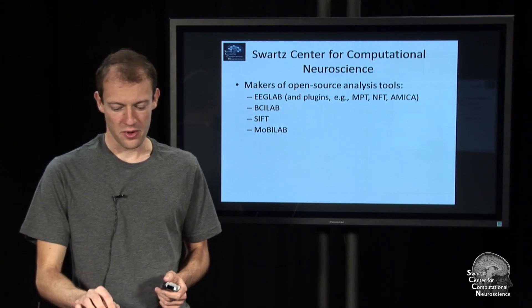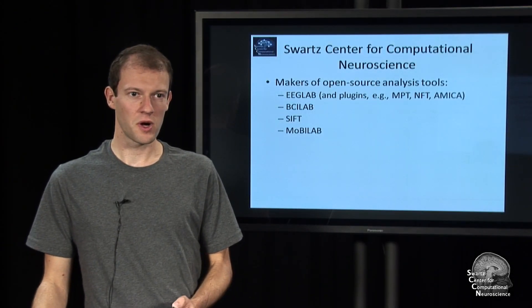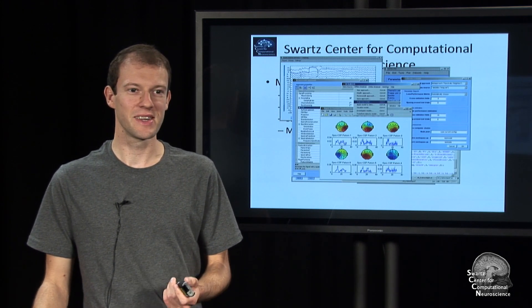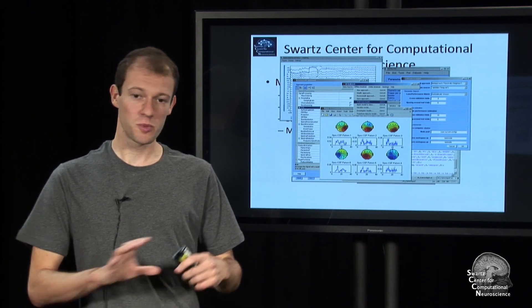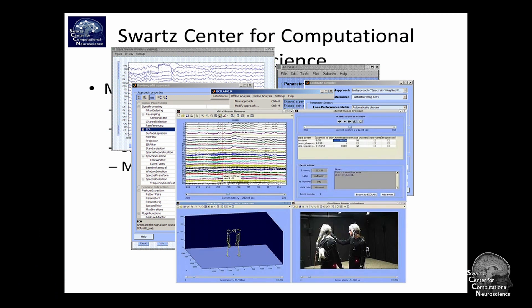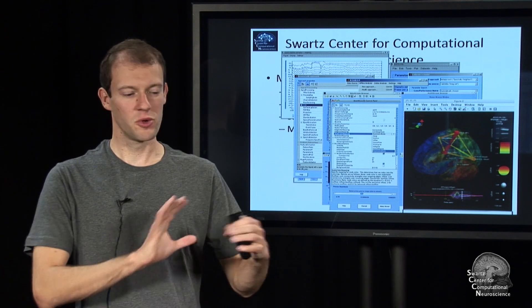We are most known as the makers of certain open source toolboxes, most of them for MATLAB. That starts with EEGLAB, which is an offline EEG analysis toolbox and the most used open source toolbox for EEG worldwide. You might have already heard of that in your lab. We also have BCILAB, which is specifically for brain computer interface design — our topic for this lecture. And then we have a toolbox for mobile brain body imaging, and one for source information flow between sources in the brain.